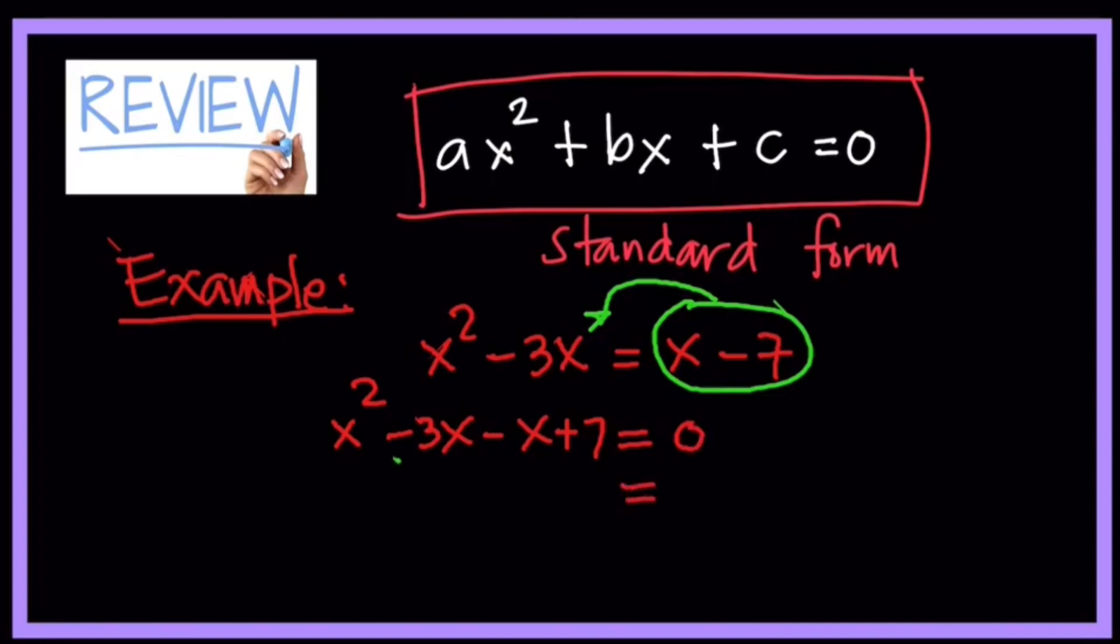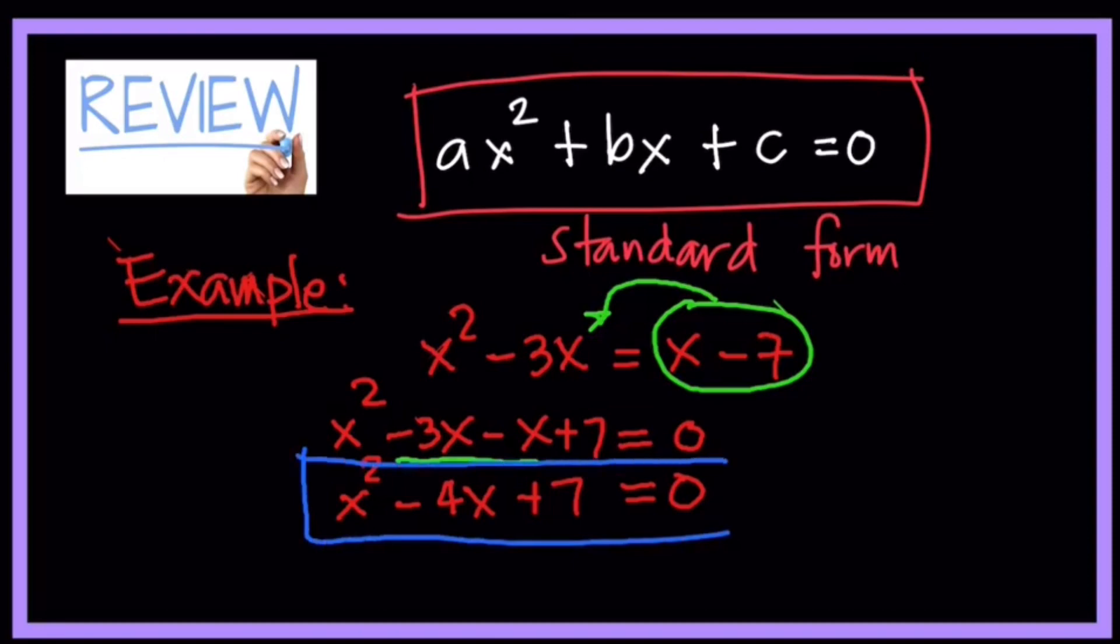And then after which you are going to simplify negative 3x and minus x. Similar signs we are going to add. So negative 4x plus 7 is equal to zero. That is now our quadratic equation in standard form.